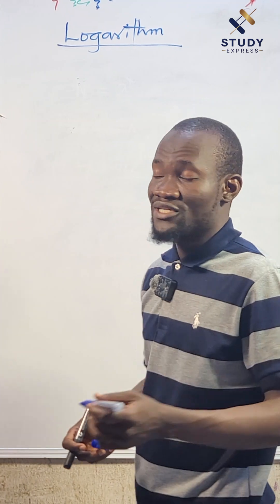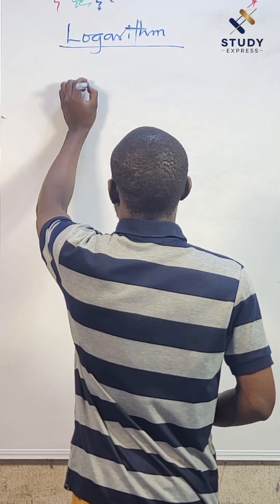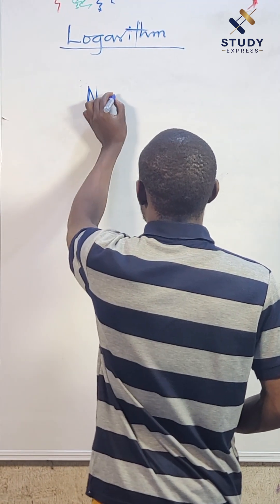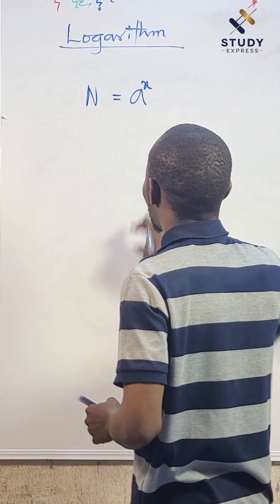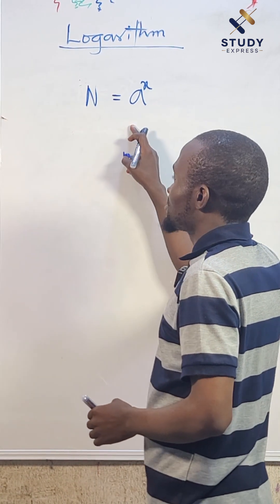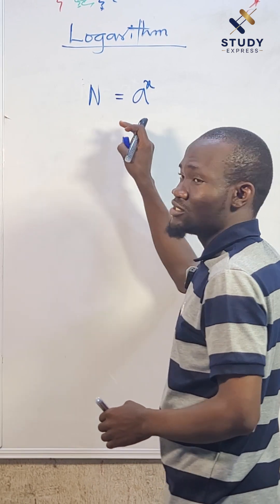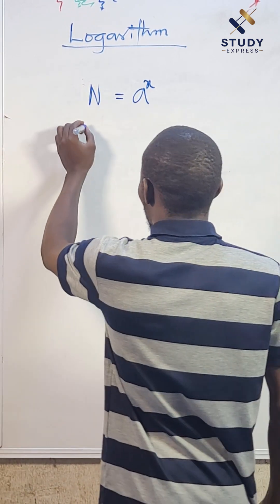What I'm trying to say is that whenever we have N is the number whose index is what? We have a raised to power x. So therefore to get the power of the base in index form of this number, what do we use? We use logarithm.